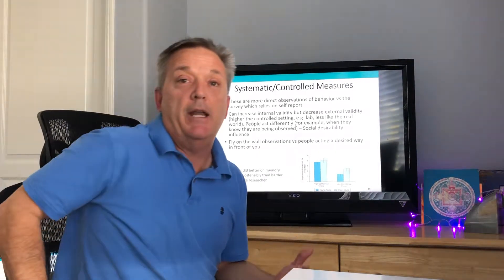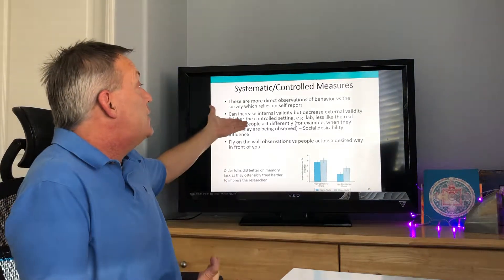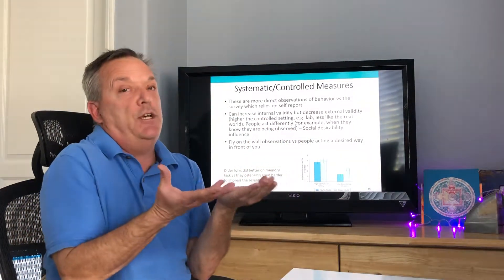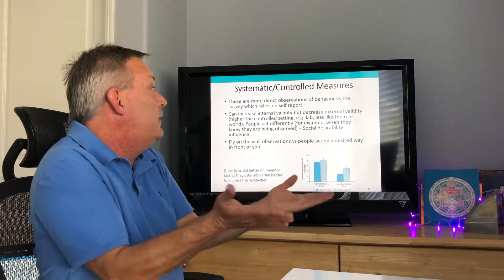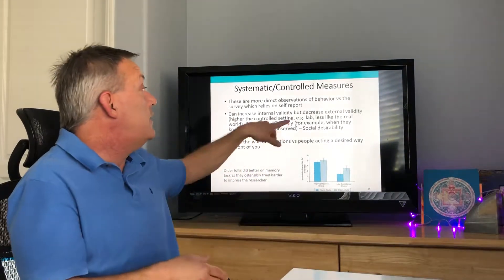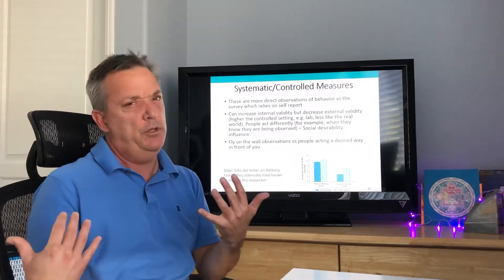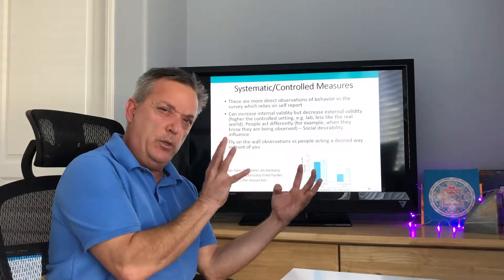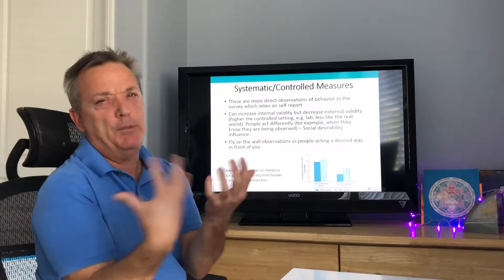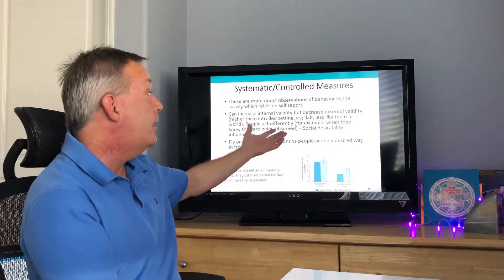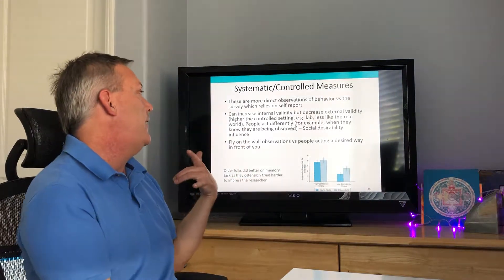More systematic or controlled measures involve direct observation of behavior rather than self-report. This can increase internal validity, since direct observation has less social desirability bias than surveys. However, it decreases external validity — a highly controlled lab setting is less like the real world. There are trade-offs: in the lab you can control most variables except the one you're manipulating, but results may have less applicability to the real world.